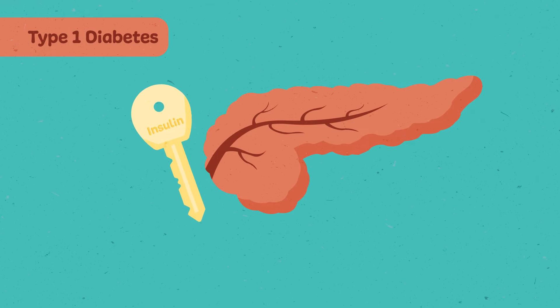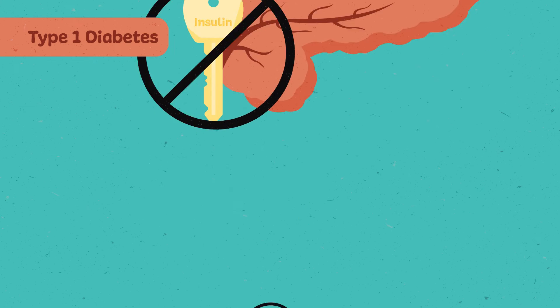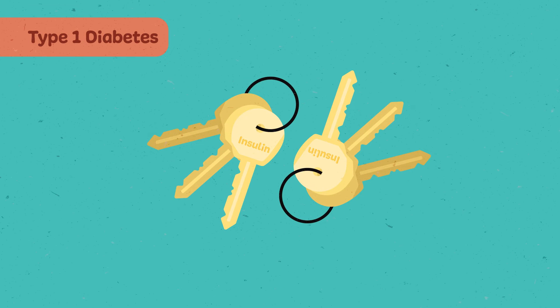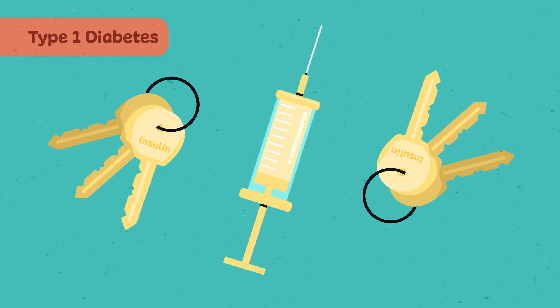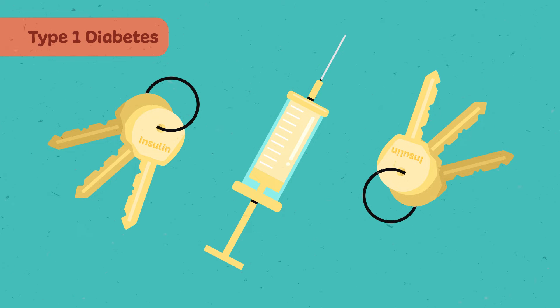In type 1 diabetes, your pancreas stops making keys altogether. Therefore, you need to put keys in your body, i.e., inject insulin, or sugar can't get into your cells.